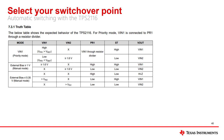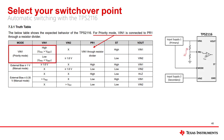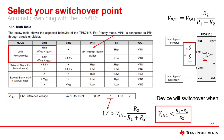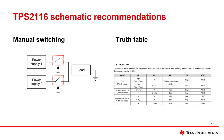Now that we know how to set up the TPS2116 in an automatic switchover configuration, let's discuss how to determine the switchover point. VN1 needs to be connected to PR1 through a voltage divider. The PR1 pin voltage is then fed into a comparator, comparing the PR1 voltage against a constant VREF. Checking the VREF value in the datasheet, this is typically one volt. Using the voltage divider equation, we can substitute VPR1 for one volt and see the device will switch over once VN1 is less than (R1 + R2) / R2.